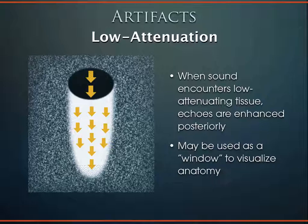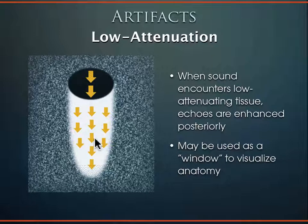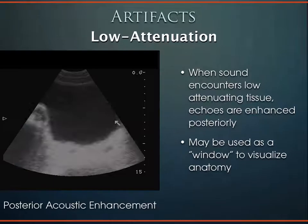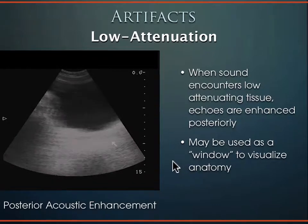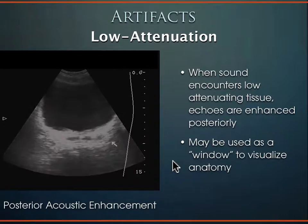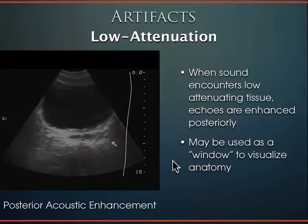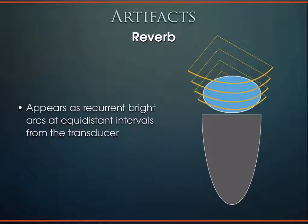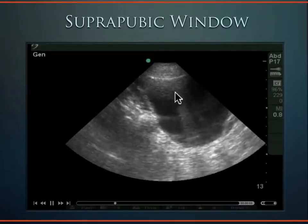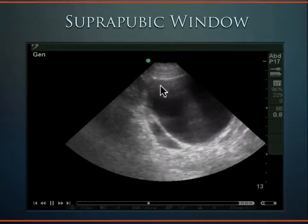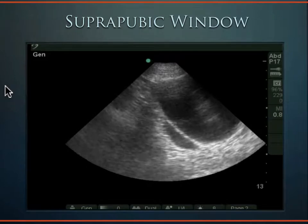Regarding artifacts: the bladder is a low-attenuating structure, so sound travels through it easily and speeds up, making everything behind it appear hyperechoic — posterior acoustic enhancement. This means you may need to turn down the far-field gain when structures behind the bladder are over-gained. Another artifact is reverberation artifact — equidistant bright arcs coming down from the transducer — which we commonly see when imaging the bladder.